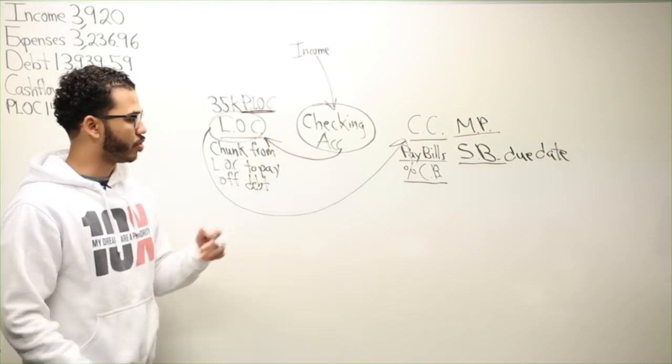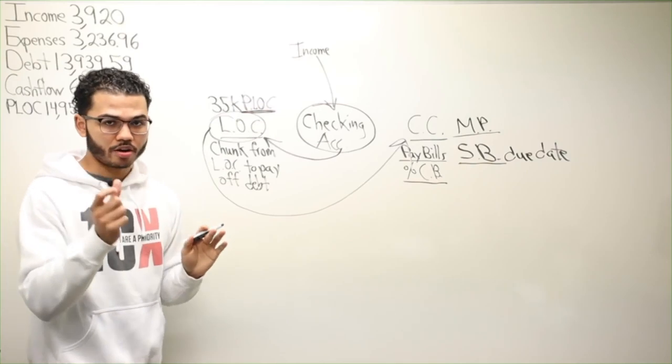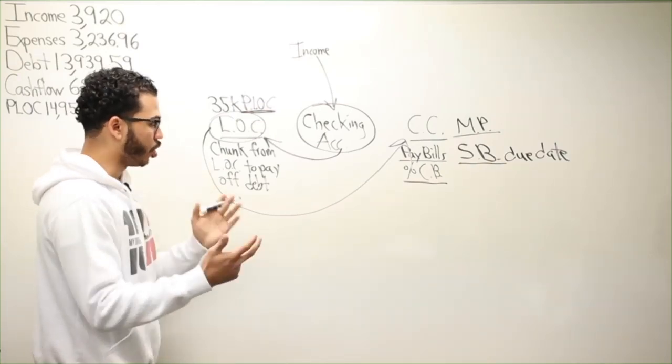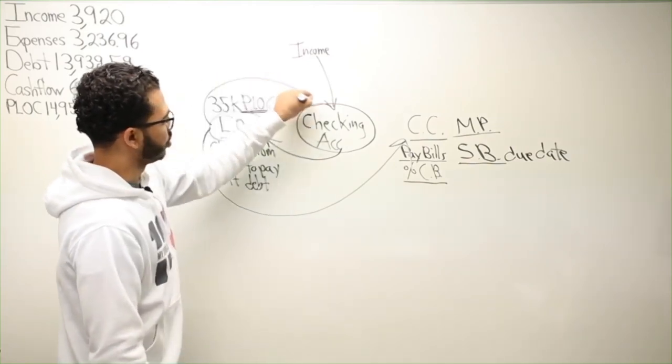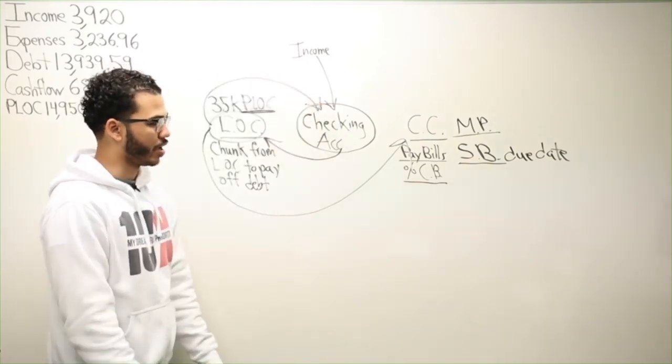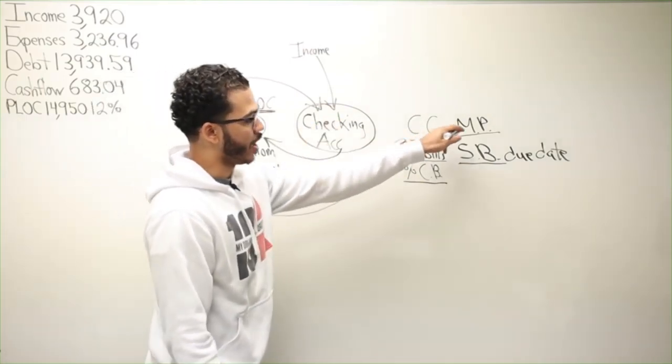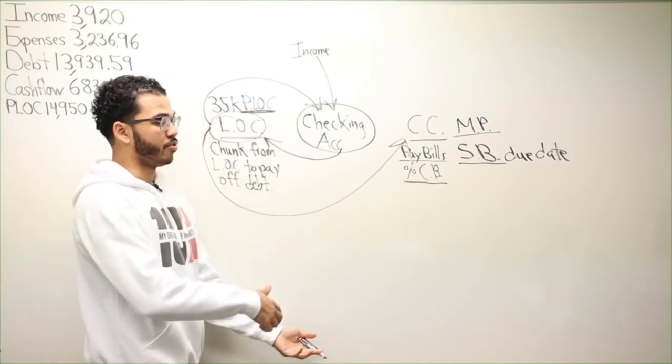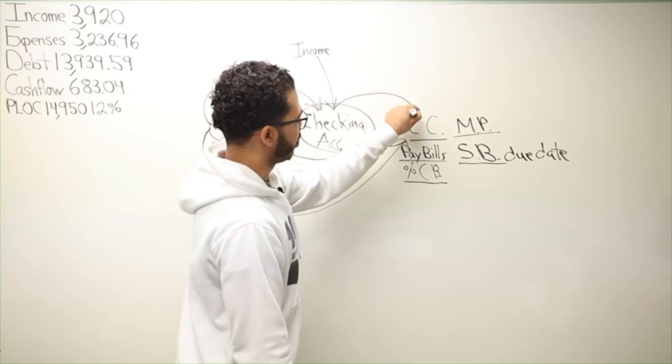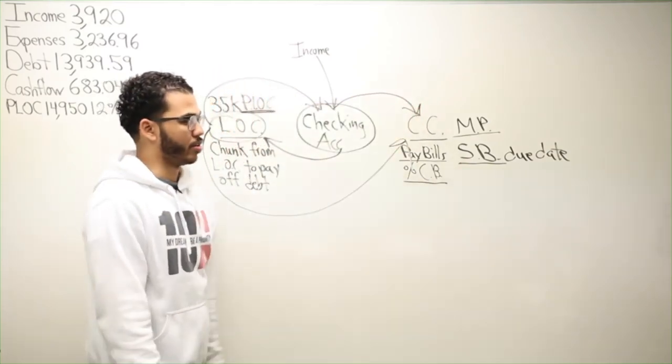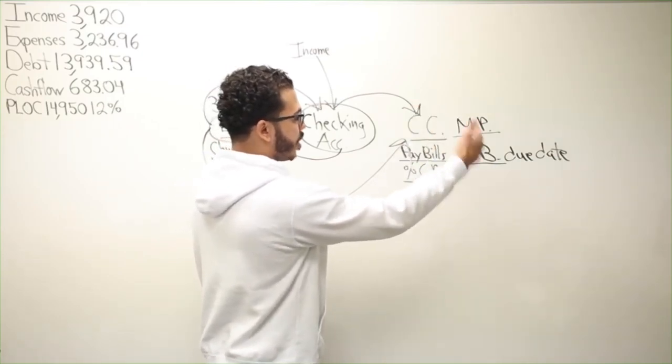Now, there are some credit lines, personal lines of credit, HELOCs, that do not come with a card like a credit card. So you would take the money back out of the line of credit to the checking account. You'll make a transfer back to your checking account on the day that credit card is due, or the day before just to be safe, and then make your payment to the credit card.